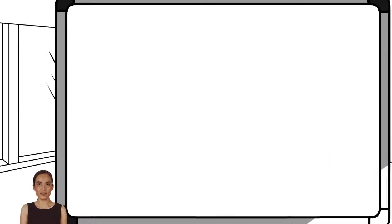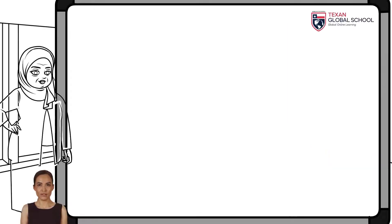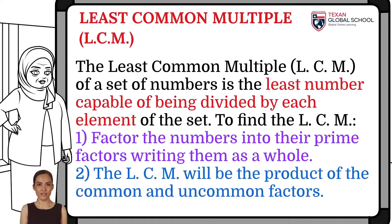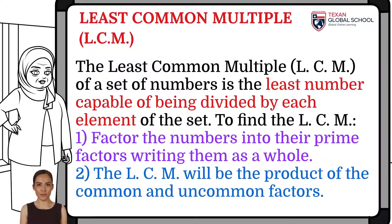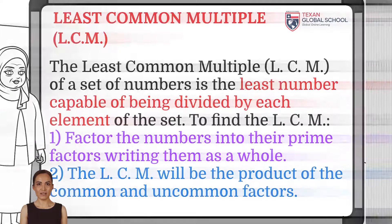The least common multiple of a set of numbers is the smallest number capable of being divided by each element. The least common multiple is calculated by obtaining the prime factors of each number. The least common multiple will be the product of the common and uncommon factors.